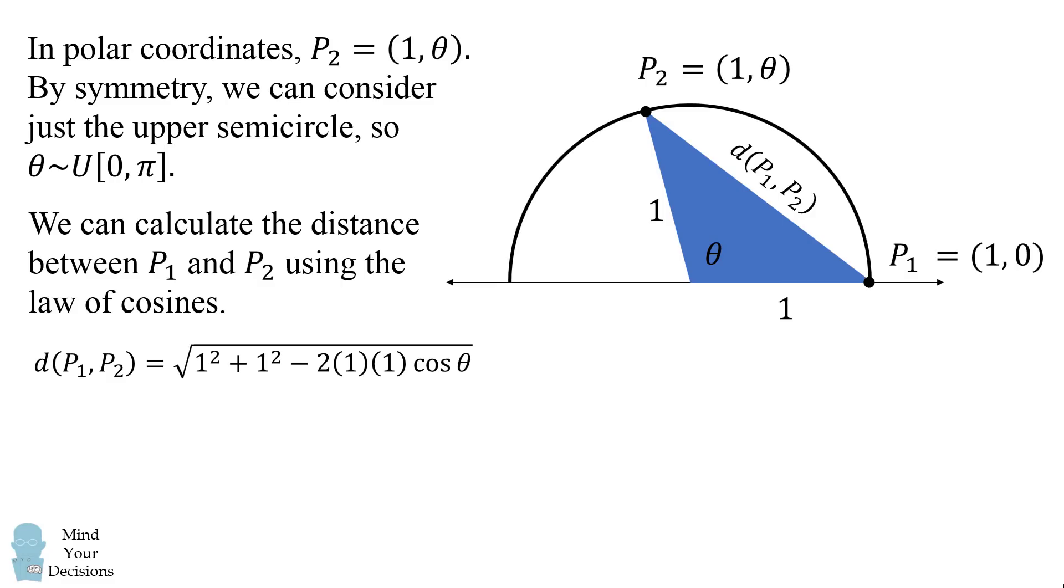We get that the distance is equal to the square root of the following: 1 squared plus 1 squared minus 2 times 1 times 1 times the cosine of theta. This simplifies to be the square root of 2 minus 2 cosine theta.